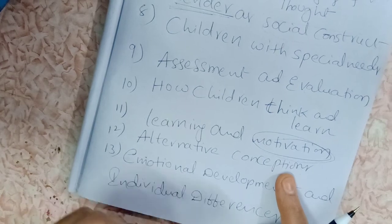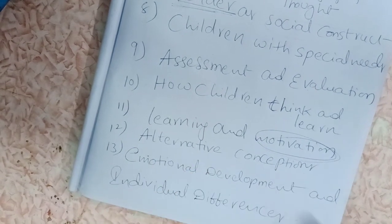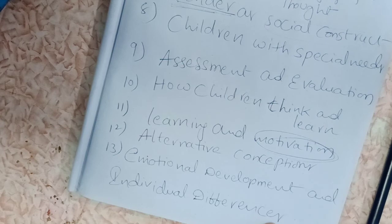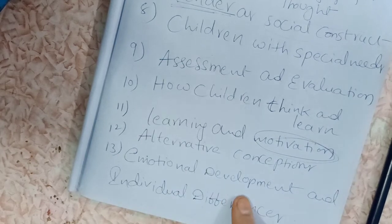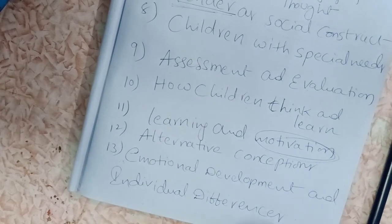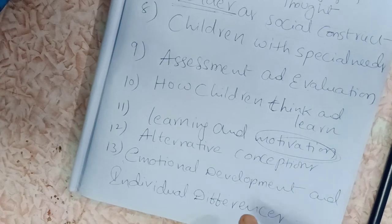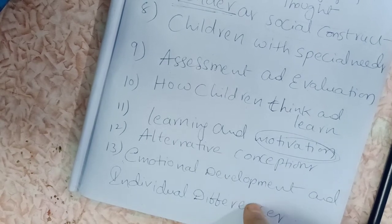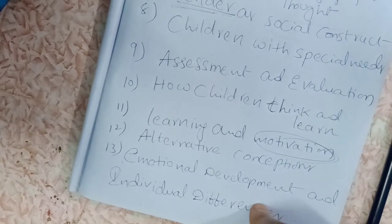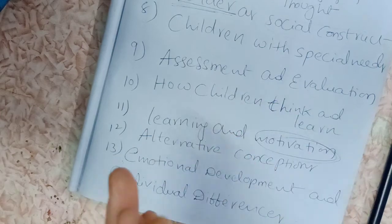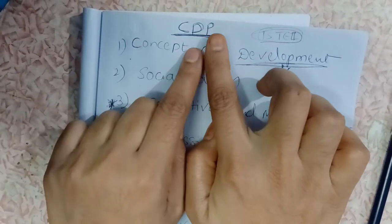Alternative conceptions cover the concept and definition of alternative conceptions and social negotiation as a learning method. The thirteenth topic, emotional development and individual differences, covers the role of the teacher in emotional development, how emotions affect learning, and differences at the social, gender, language, cultural, and religious levels.